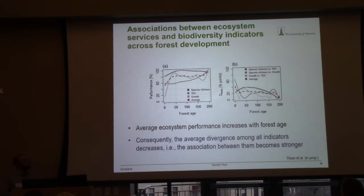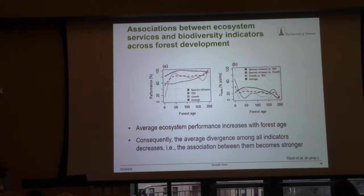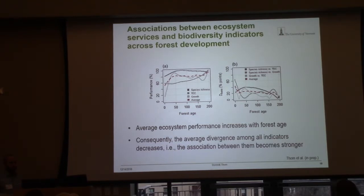If we take these curves and subtract them from each other, we get the association of these different factors. If we take richness and total ecosystem carbon, we derive this curve here — the black one. If you focus on this average, you can see that the divergence between these curves is high at first, but then goes down as forests are aging. So that means the association between carbon storage, timber growth, and species richness is becoming stronger.